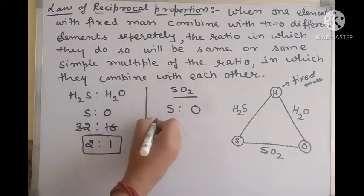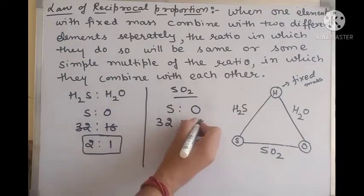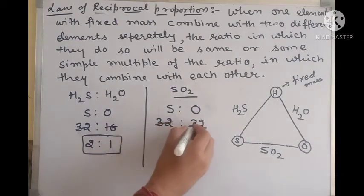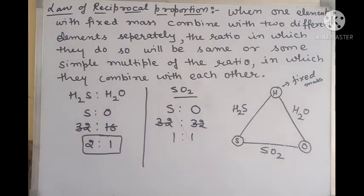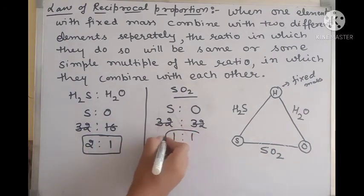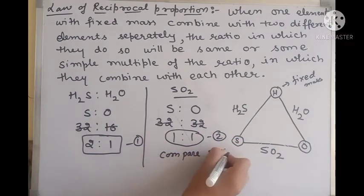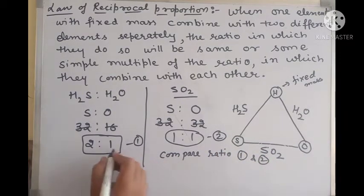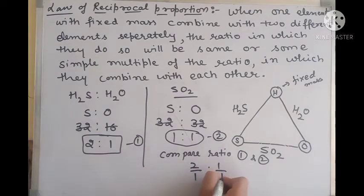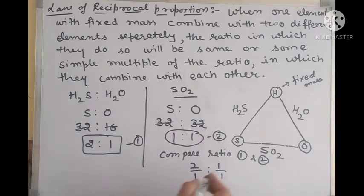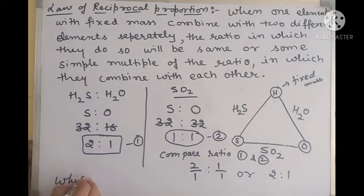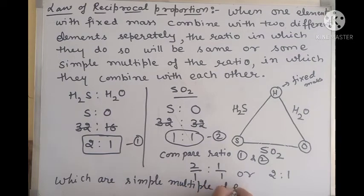Now if we talk about this, sulfur is 32 here whereas oxygen here is 32. So simplest ratio we are getting is 1:1. If we compare them, first and second, we can see this ratio we have written 2:1, but we have written 1:1. So simply we can represent as 2:1, which are simple multiples of each other.